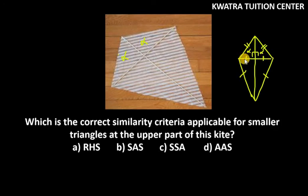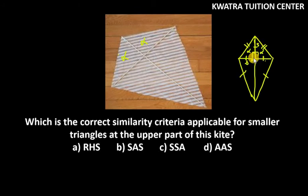The two sides are equal, and there is one common side. With a 90-degree angle between one side and the other, the applicable similarity criterion is SAS — so the answer is option B.